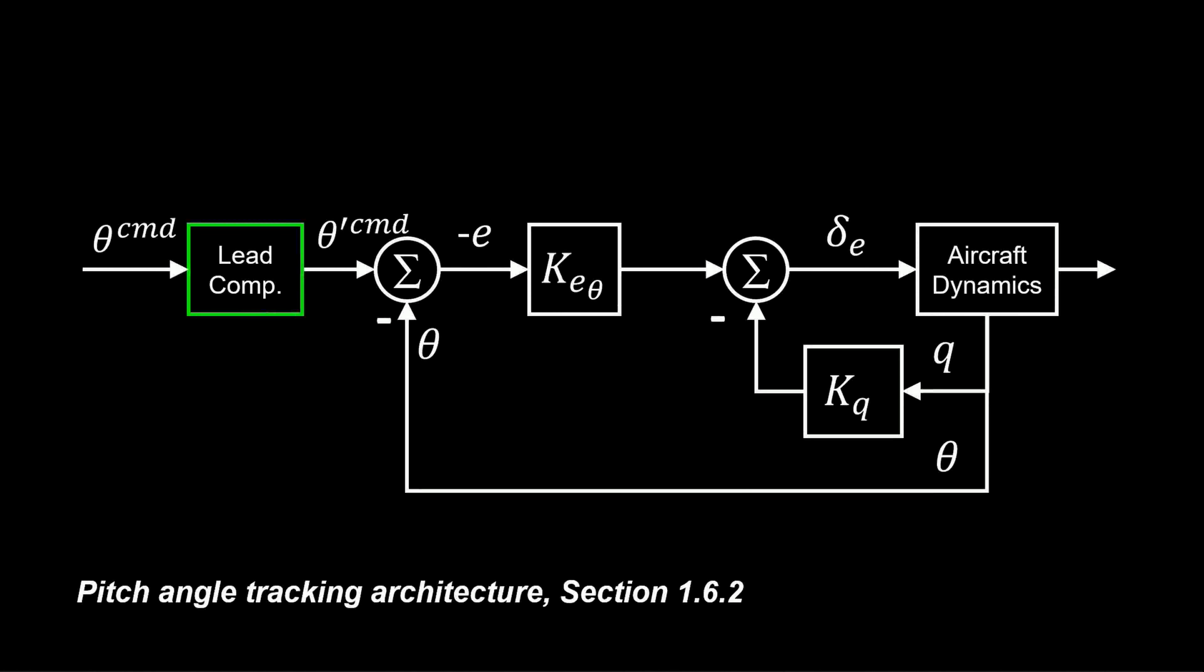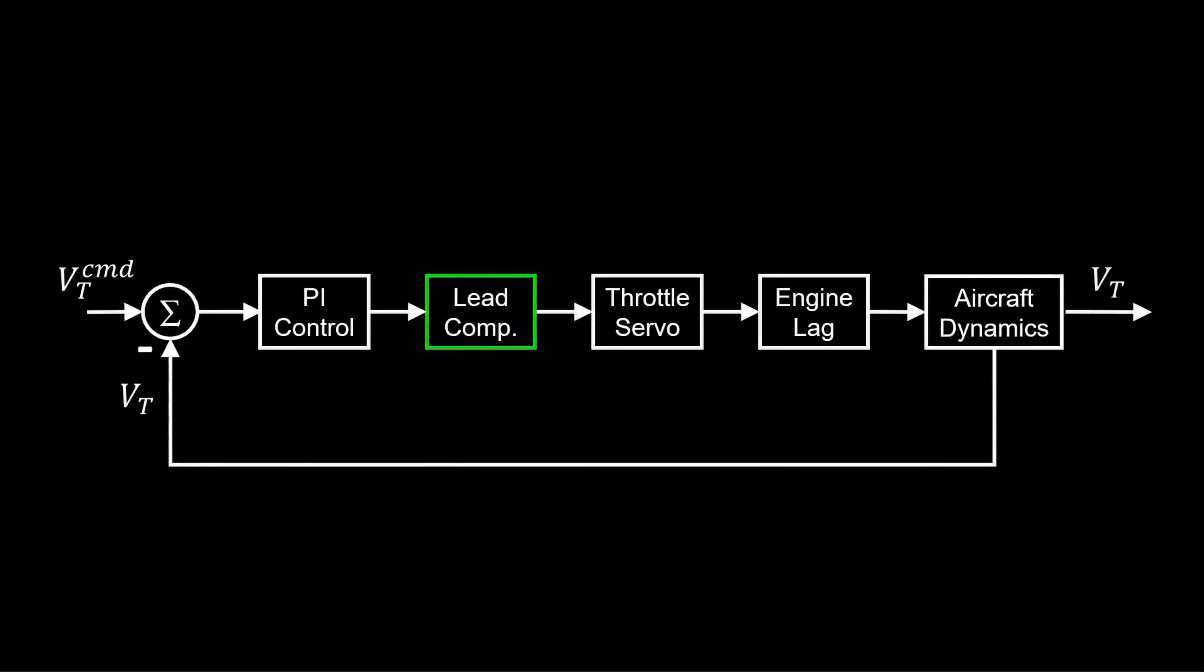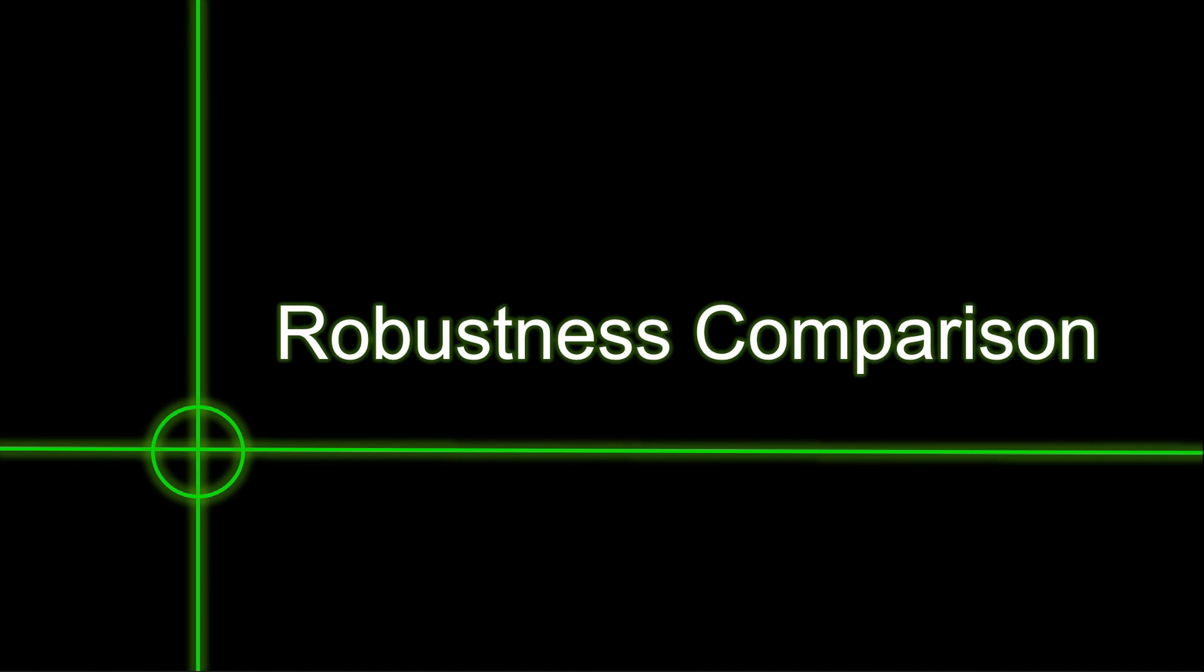In contrast to the previous lesson, where we used the lead compensator outside of the pitch loop. In this lesson, we're including the lead compensator in the loop, which adds gain and adds phase. And thus, it'll affect the stability margins. So, we must check the basic stability metrics before accepting this lead compensator.